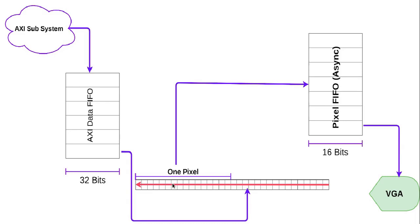In order to work with the data stored in this FIFO, we first need to split out the individual pixels. This processing is done via a 32-bit shift register which shifts left 16 bits at a time, and we only look at the upper 16 bits. These 16 bits are the pixels we are looking for, which we will be storing in an asynchronous FIFO. This FIFO will be read one element at a time and will output the pixel data to the VGA screen.